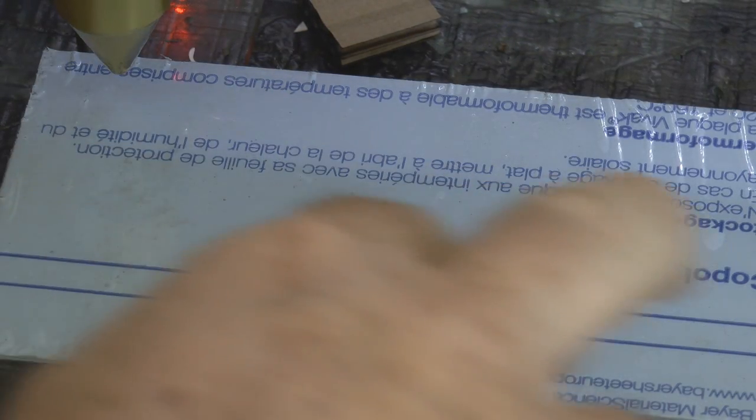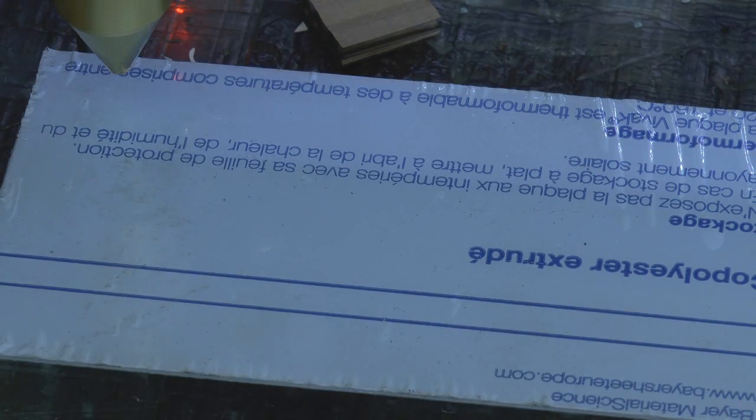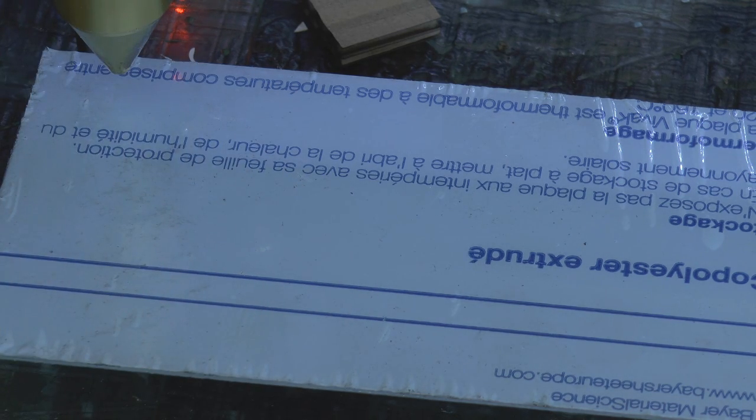So here we've got some PETG, which basically is a co-polyester. This is normally a difficult material to cut. It does produce fumes, but they're not particularly dangerous fumes.